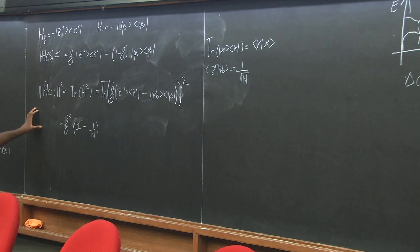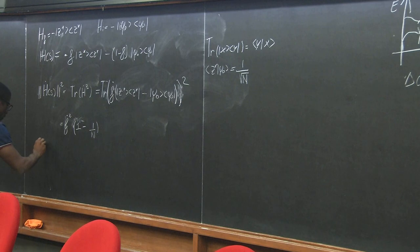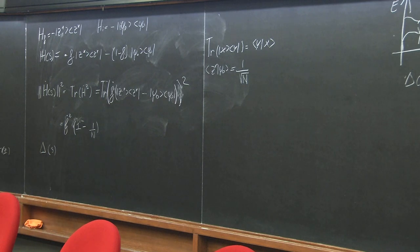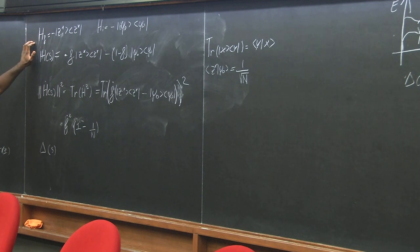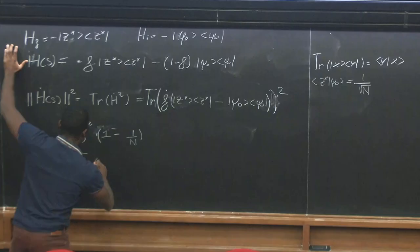Similarly, we can compute the second term needed: the gap Δ(s). The computation of the gap is a bit more involved. For this many-body problem, the reason we can compute it is that the Hamiltonian only involves projections over two states, so it can be written in a two-dimensional basis.